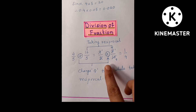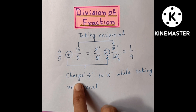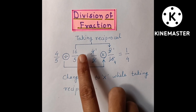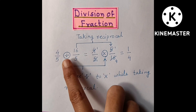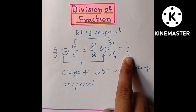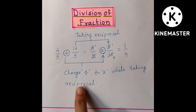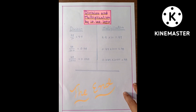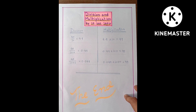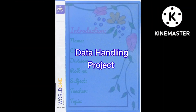Then division of fractions — division changes into multiplication while taking the reciprocal. So here division changes into multiplication and the product is 1/54. Then here is division and multiplication by ten, hundred, and thousand.